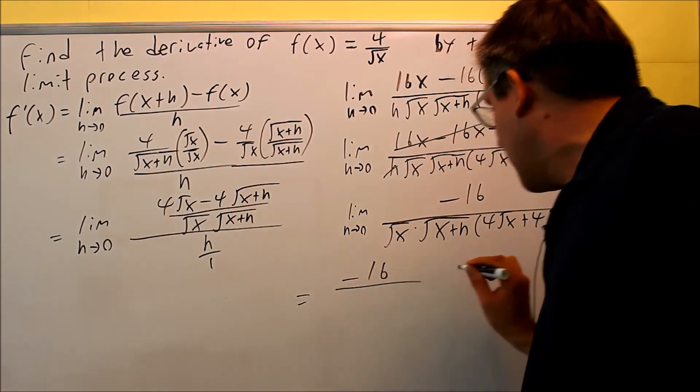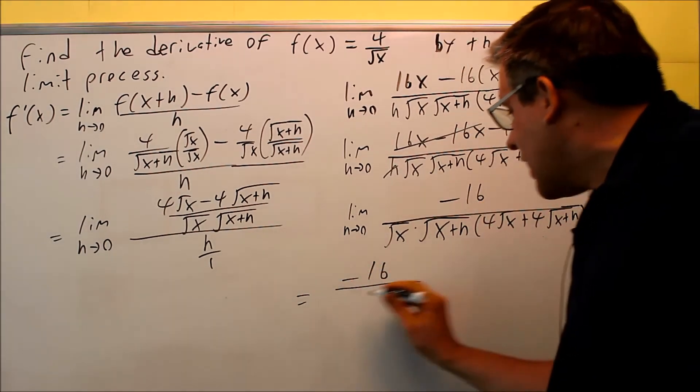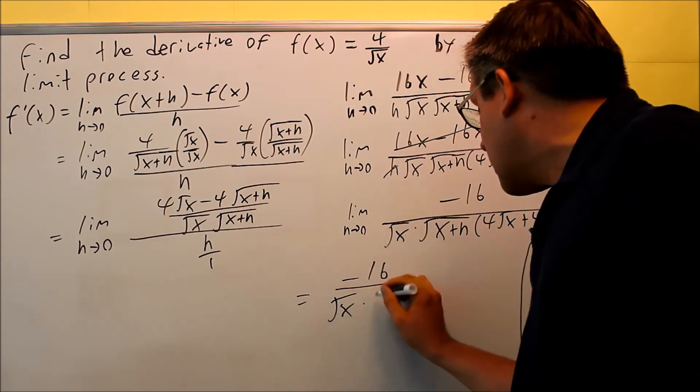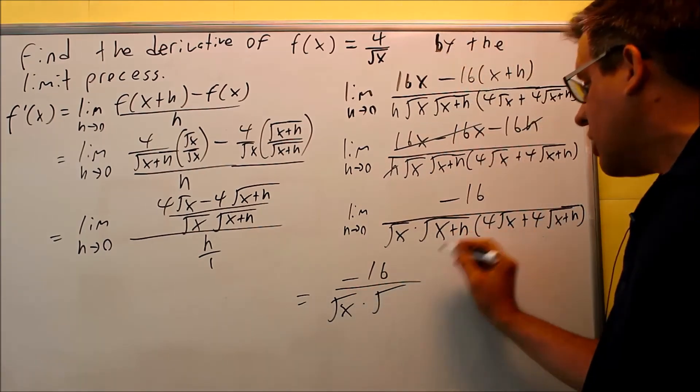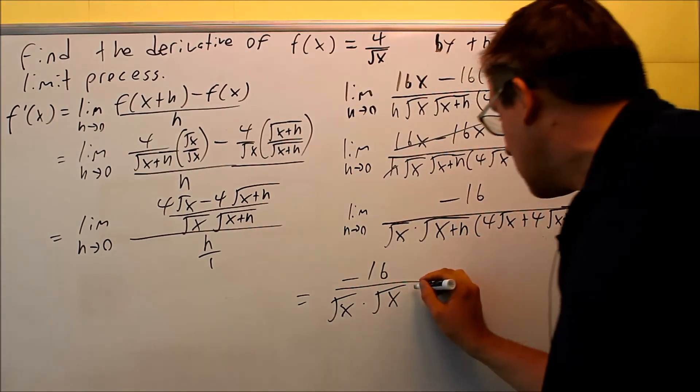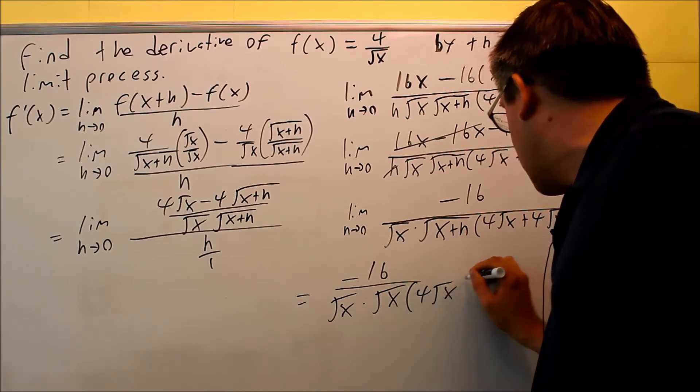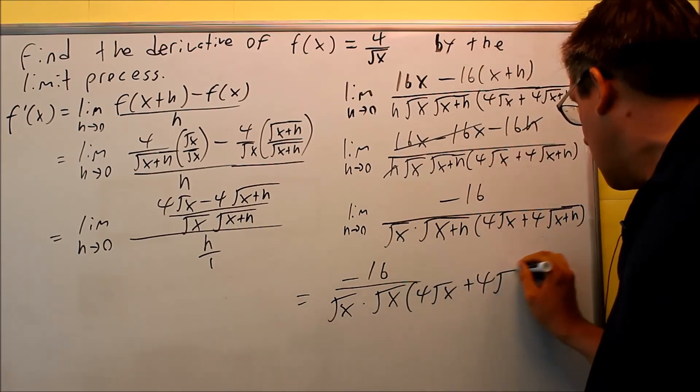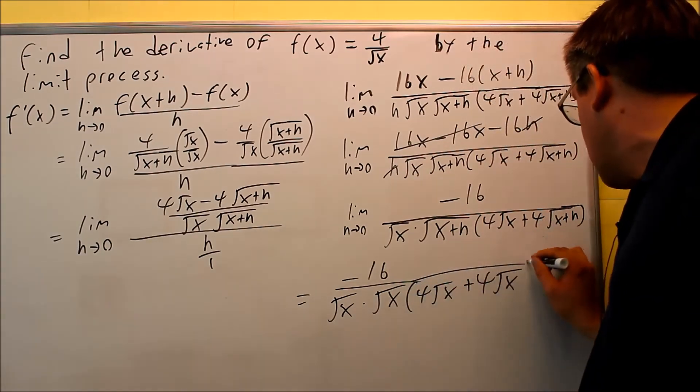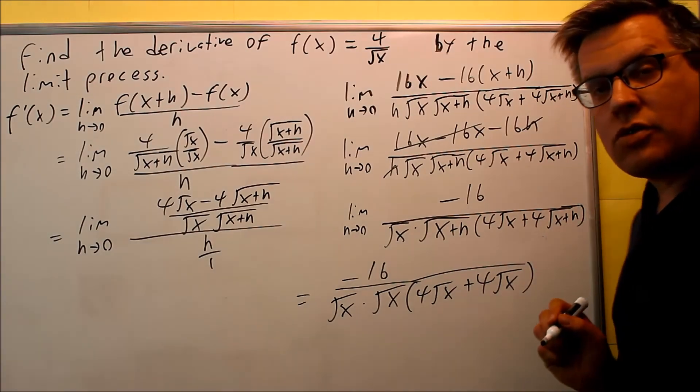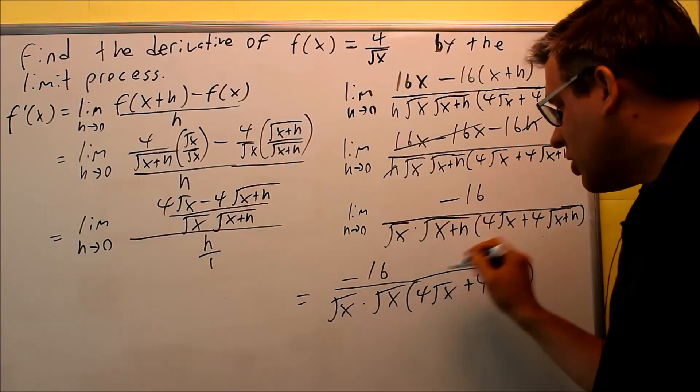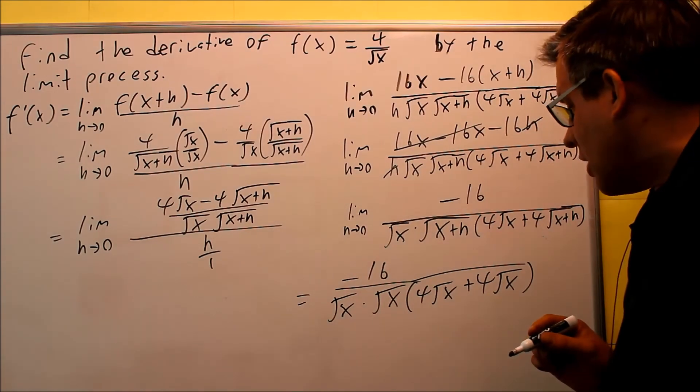I am going to erase this step down here so that we have some space to do that. I am putting in zeros for all the h's. Square root of x and I get square root of x plus zero is just going to be square root of x. I get four root of x here plus that will be another four root of x because, again, I am putting in zero in for h. We just need to do some simplifying on this.